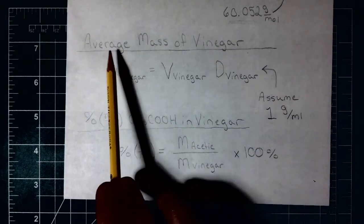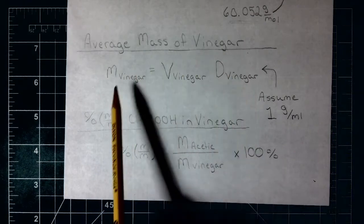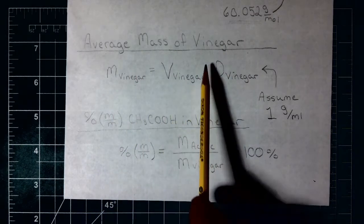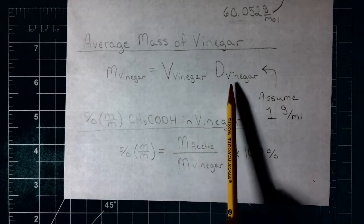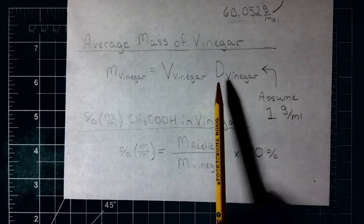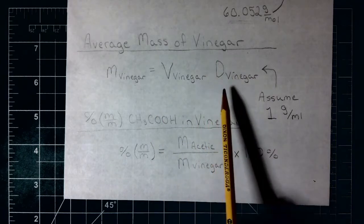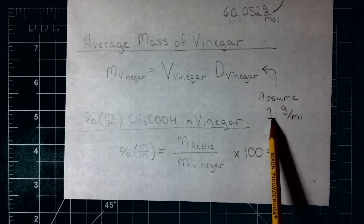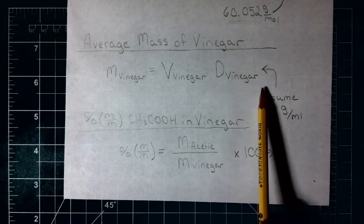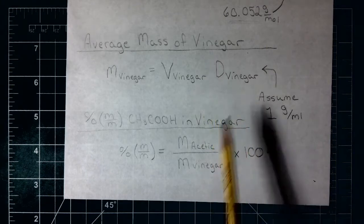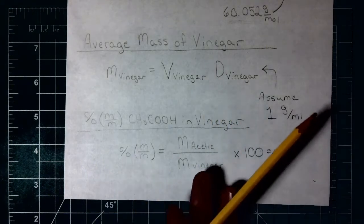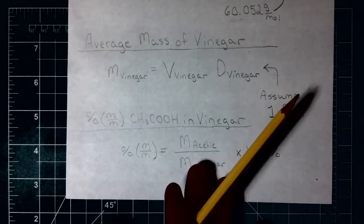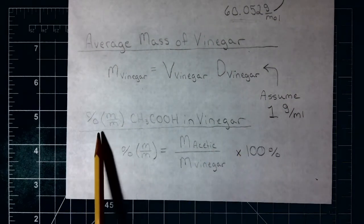Next — and this one's kind of tricky — what is the average mass of the vinegar? The mass of the vinegar is going to be the volume of the vinegar times its density. We don't really know the exact density of vinegar, but we're going to assume it's 1 gram per milliliter, similar to water.